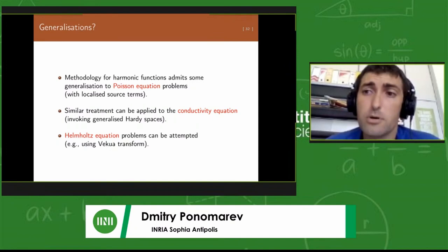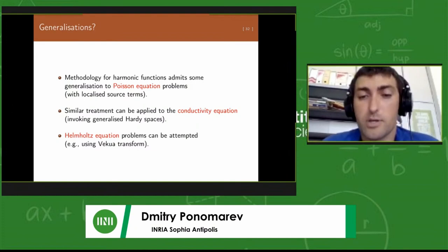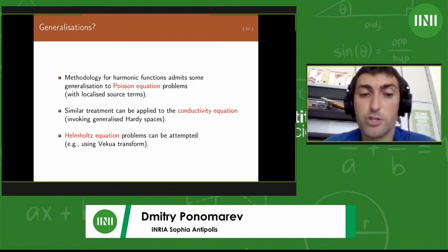Once these phi n, mu n are found, then we could find F0, and from F0 we can find f anywhere in the upper half-plane by the Schwarz formula. It's natural to extend this to the Poisson equation. In some sense it's easy to do when the source term is very localized. In a sub-region you will have a harmonic function, and then you could incorporate the source term in the boundary conditions.